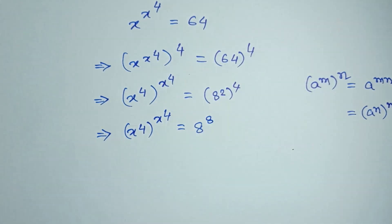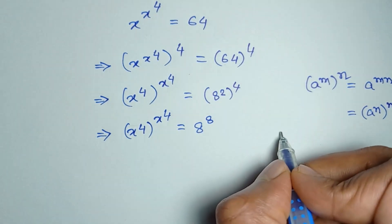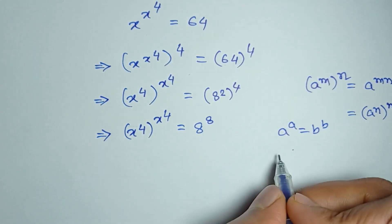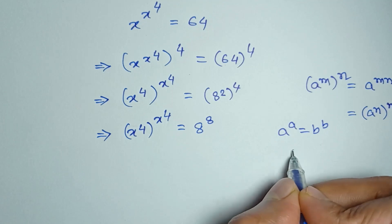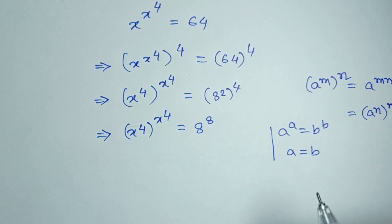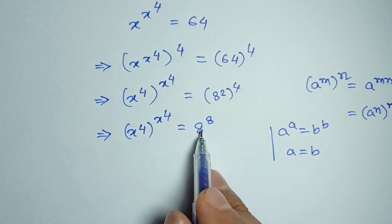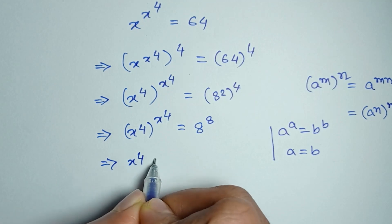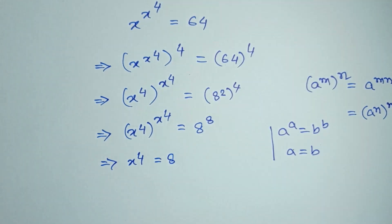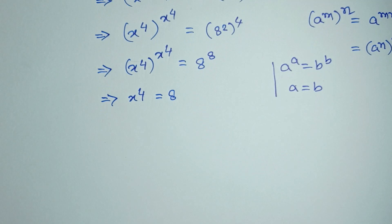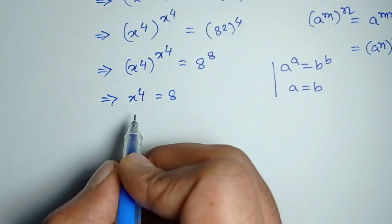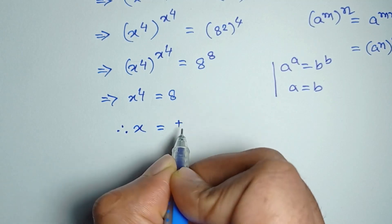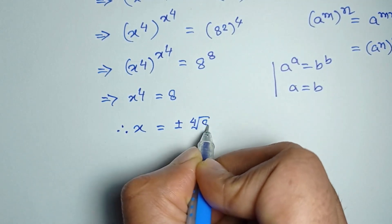Now from a to the power a is equal to b to the power b, we can write a is equal to b by comparing both sides. So here a is equal to x to the power 4 and b is equal to 8. Therefore x to the power 4 is equal to 8, and taking the fourth root of both sides we get x is equal to plus or minus the fourth root of 8.